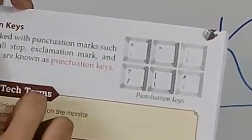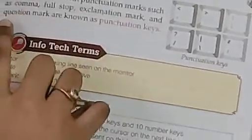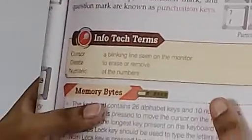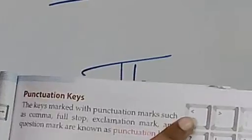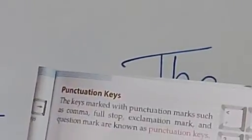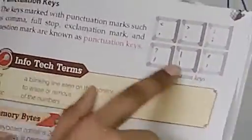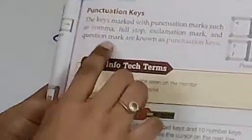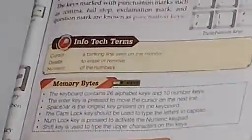Punctuation key. The keys marked with punctuation marks such as comma, full stop, exclamation mark and question mark are known as punctuation keys. On the keyboard you can see comma, inverted comma, and question mark. We press these keys to bring a full stop, exclamation mark and question mark on the screen.